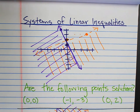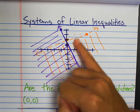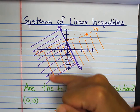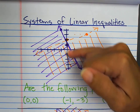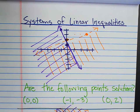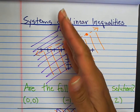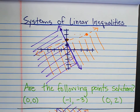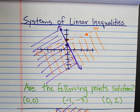We're going to do a quick review and check to see if some points land in our solution set for this inequality. We have the orange line that is not inclusive, and everything below it — less than the line — is shaded. We have the purple line that is inclusive, and everything less than the line is shaded. So, we want to know: are the following points part of the solution? Let's test it out.